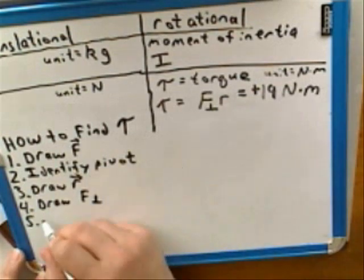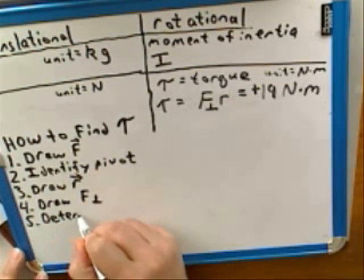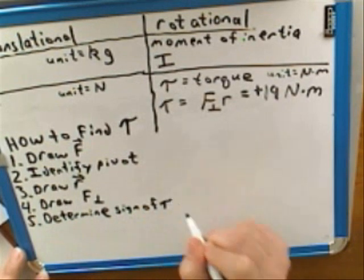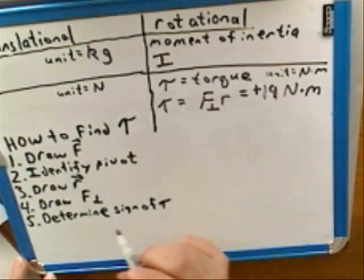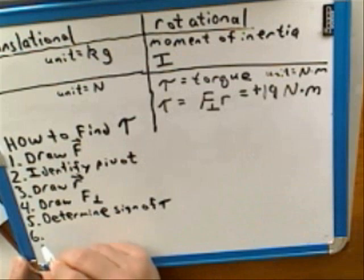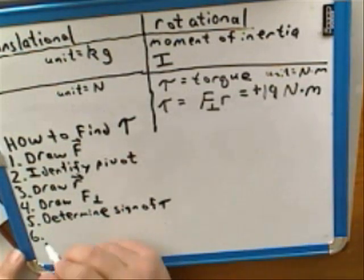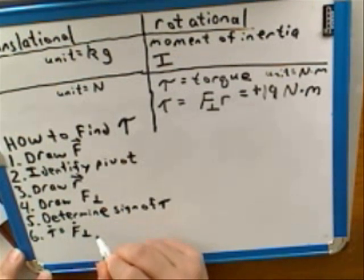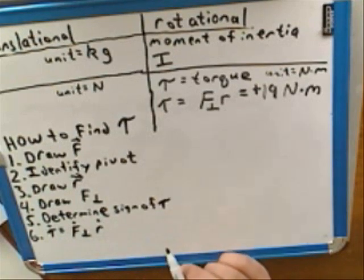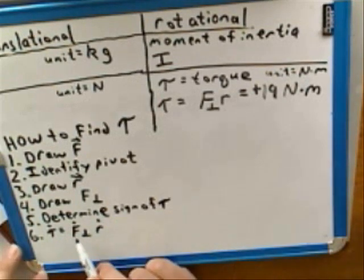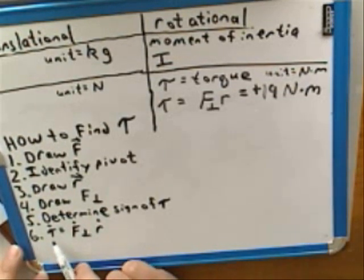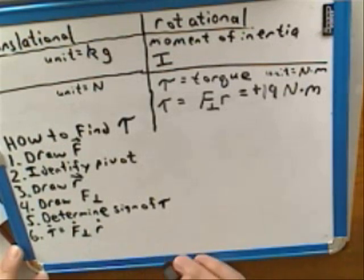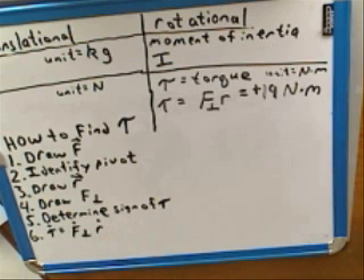All right. Then step five, you can determine the sign of the torque. Because you can figure out whether it's a clockwise torque or a counterclockwise torque. And then step six, the magnitude of the torque is the magnitude of F perpendicular times the magnitude of the r vector. So, remember that I like to use a dot to indicate when we're just focusing on magnitudes. So, this step six here is just giving us the magnitude. We use the magnitude of the F vector and the magnitude of the r vector. That gives us the magnitude of the torque. We already figured out the sign on our own from step five.